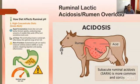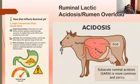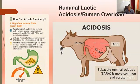Grain engorgement means that if any type of rumen doesn't have a stable diet, and if a large amount is ingested, rumenal acidosis can result.